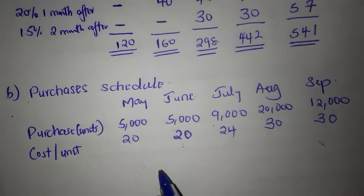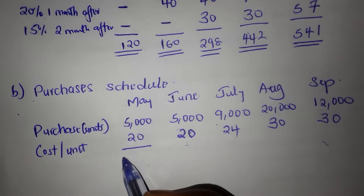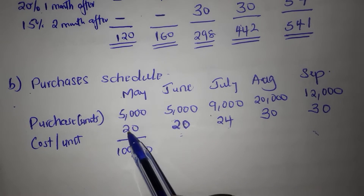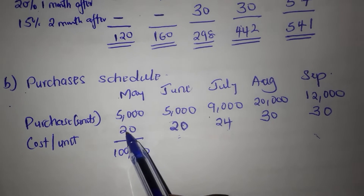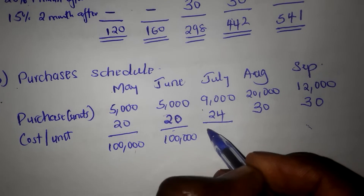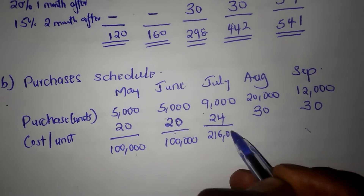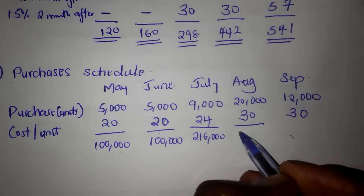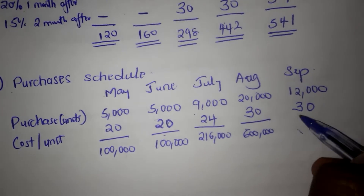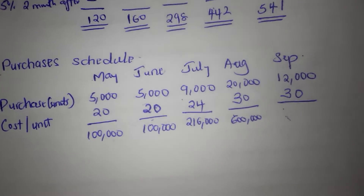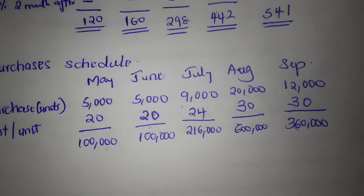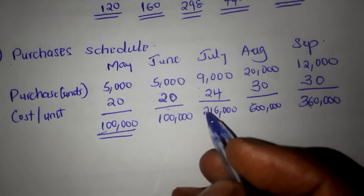Now we calculate the value of these purchases — units multiplied by cost per unit. May gives 100,000, June also gives 100,000, July gives 216,000, August gives 600,000, and September gives 360,000. We double underline those figures — that is the total value of purchases made each month.